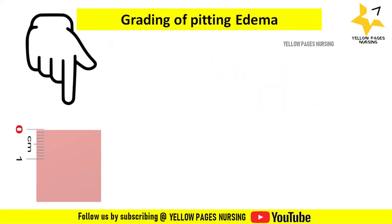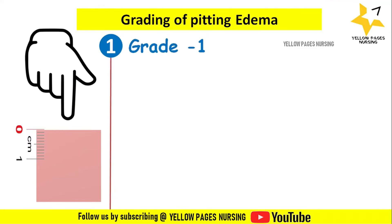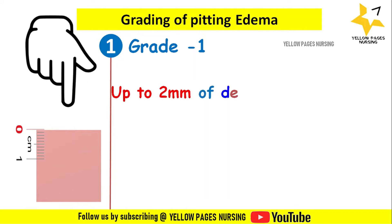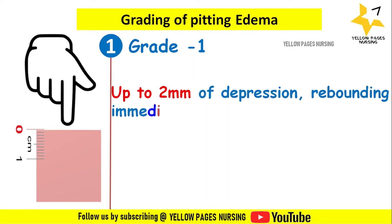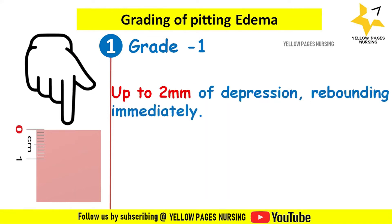In Grade 1, on pressing the edematous extremity, the pit depth is up to 2 millimeters of depression and it rebounds immediately.